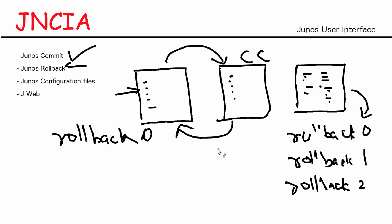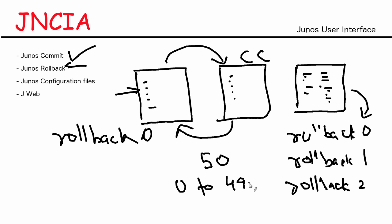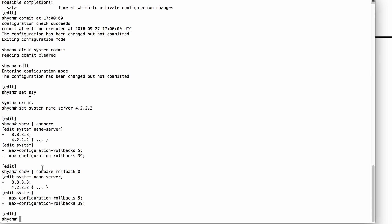The total number of rollback configurations you can save is 50 — that's the max. It is numbered starting from zero, so you go from zero to 49. That's the max you can save on your device, though you can lower this number if you'd like. Remember, when you do show compare, you're actually comparing to rollback zero, which is also your active config.